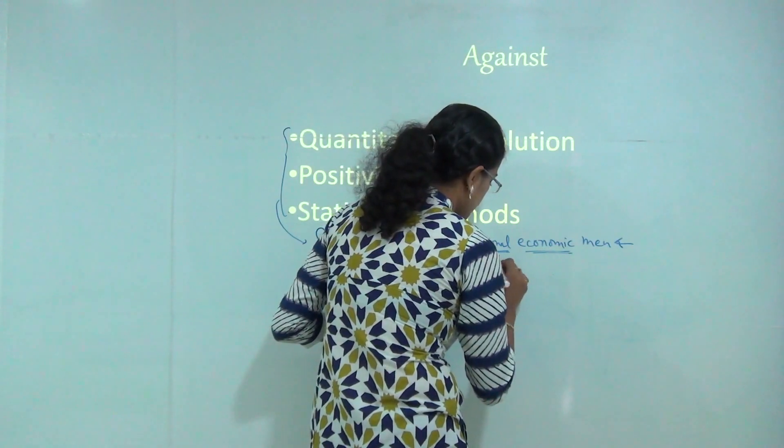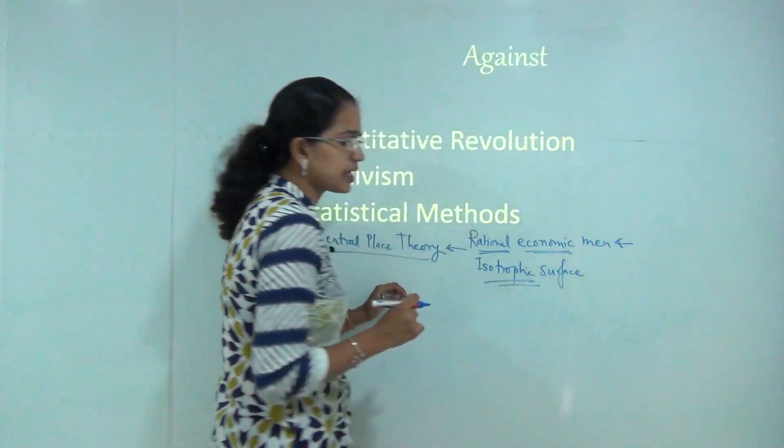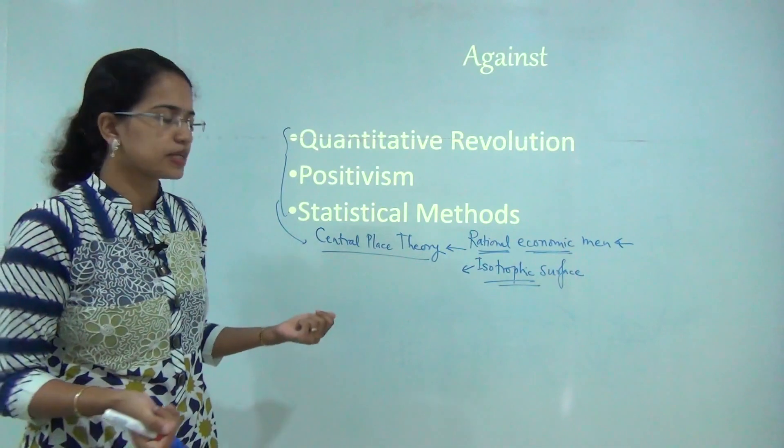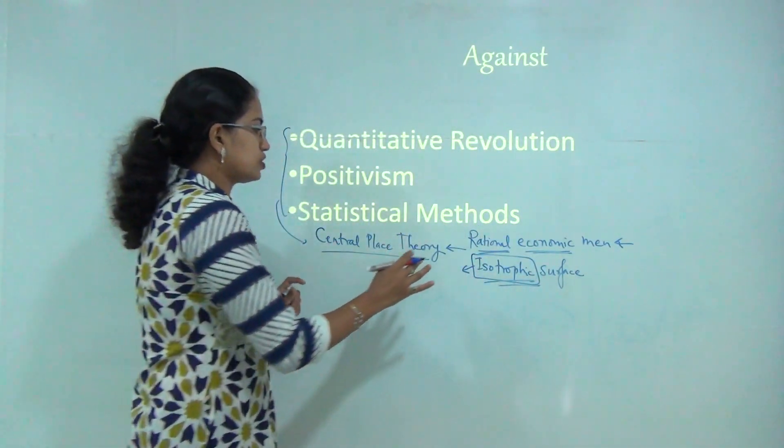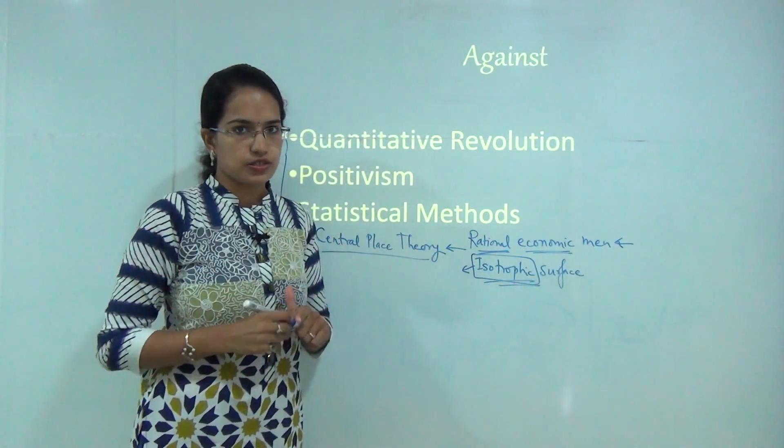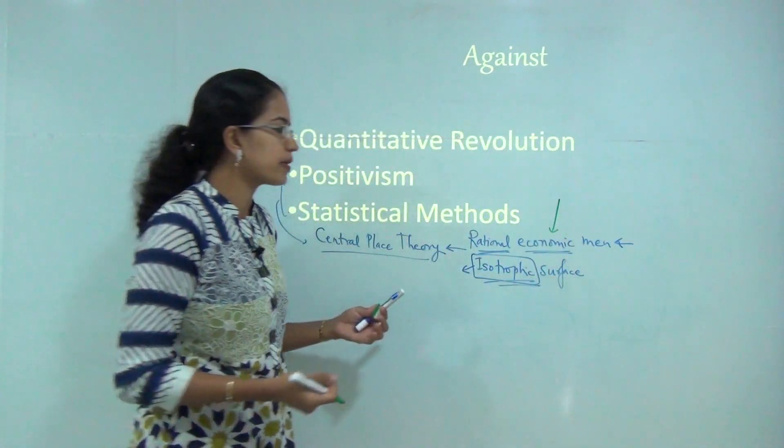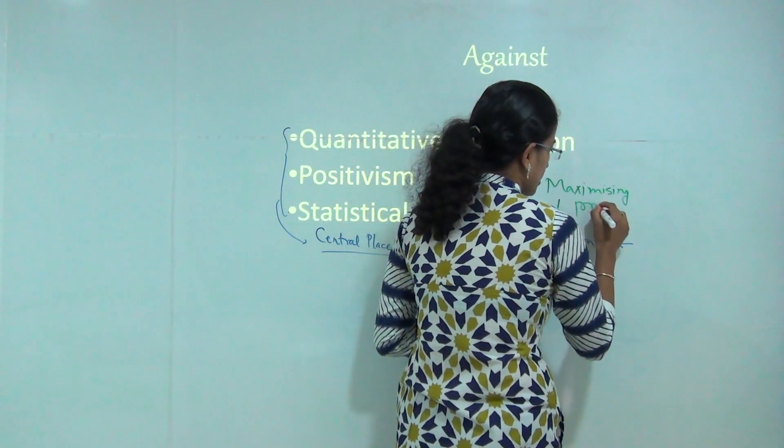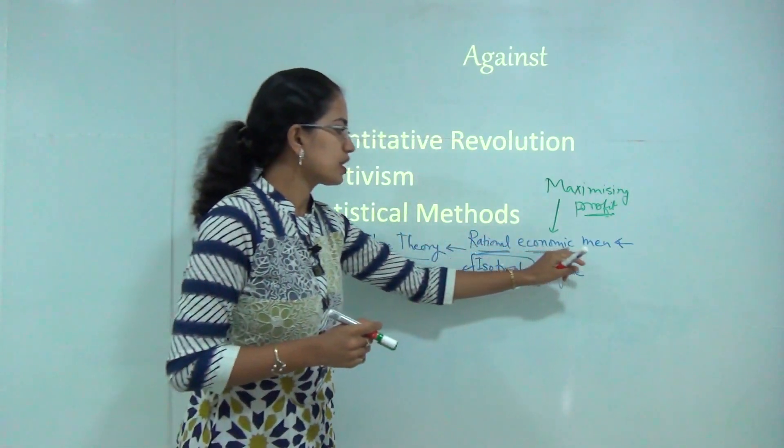The next concept was the isotropic surface, an even surface. This is again a very unrealistic example because in natural surroundings you do not have a surface that is isotropic in nature. These methods believed man to be rational and economic, and since the man was rational and economic, his main motive was maximizing the profit.